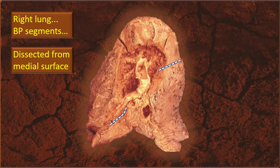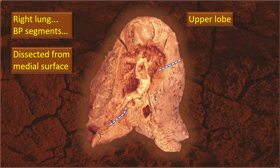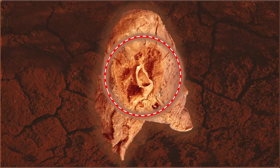The blue-white dashed line is an important reference — that is the oblique fissure. This is very important; otherwise it is difficult in a dissected lung to keep orientation. The upper lobe is above and in front, and the lower lobe is below.